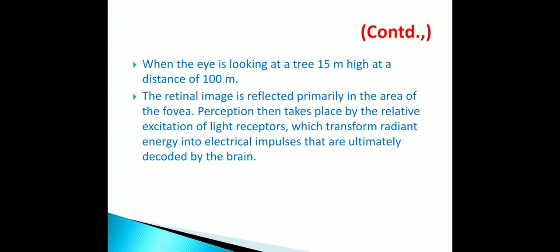When the eye is looking at a tree 15 meters high at a distance of 100 meters, the retinal image is projected primarily in the area of the fovea. Perception then takes place by the relative excitation of light receptors, which transform radiant energy into electrical impulses that are ultimately decoded by the brain.